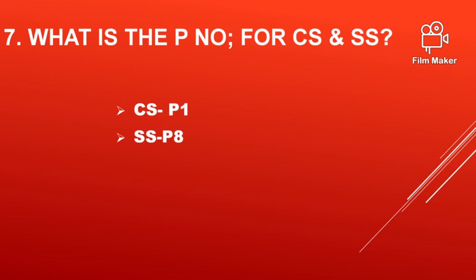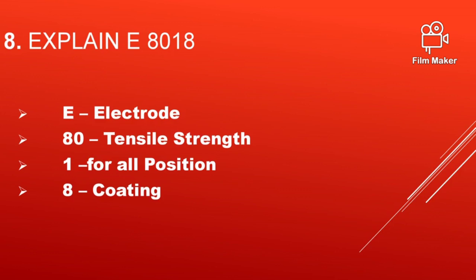What is the P number for carbon steel and stainless steel? The P number for carbon steel is P1 and stainless steel is P8. P8 is for austenitic structure. The ferritic stainless steel is P7 and martensitic stainless steel is P6.